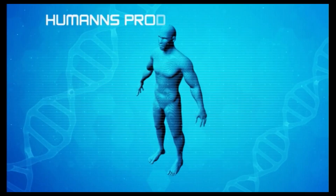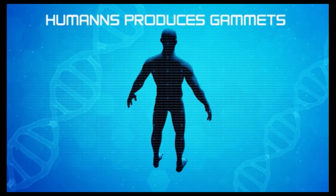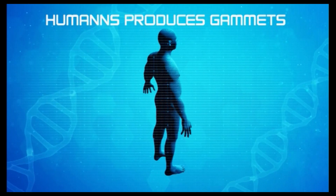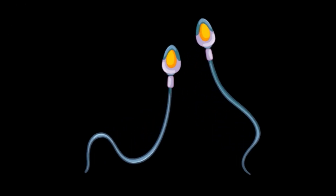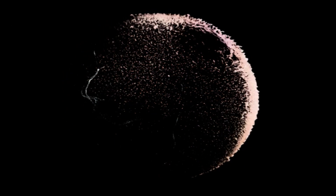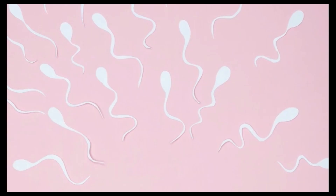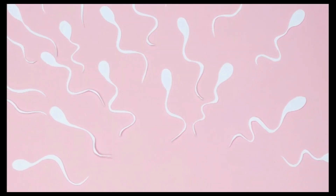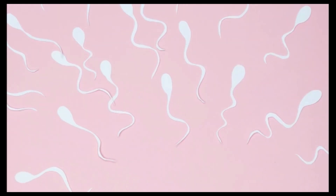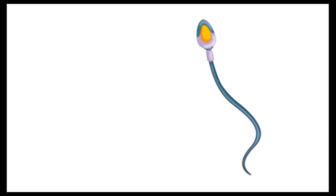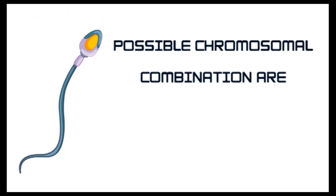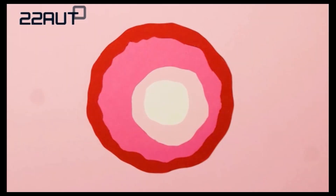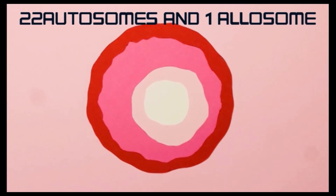Human beings produce gametes which contain only one half of the whole chromosomes, that is 22 autosomes plus 1 allosome. Male gamete is sperm and female gamete is egg. Sperm has 22 autosomes and 1 allosome, either X or Y, but never both. The possible chromosomal combinations of sperm are 22X or 22Y.